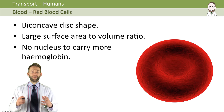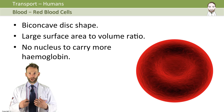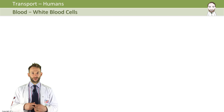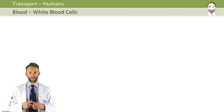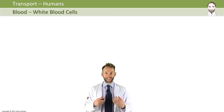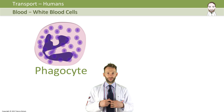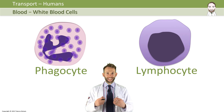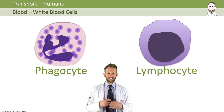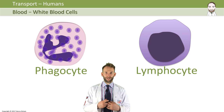White blood cells have a very different job. Their job is to protect our bodies against the invasion of disease-causing organisms, or pathogens as they're known. There are two different types of white blood cells involved: phagocytes, which do something called phagocytosis, and lymphocytes, which produce things called antibodies. We'll look at those two now in a bit more detail.